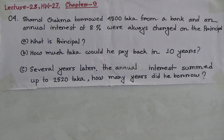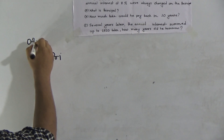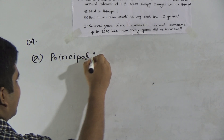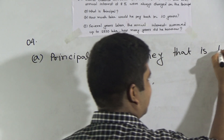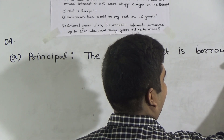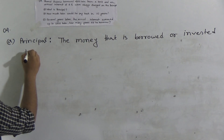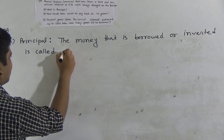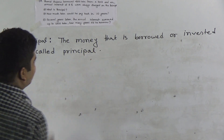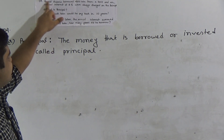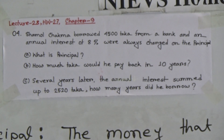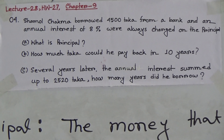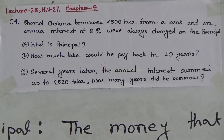Question number A — principal. The money that is borrowed or invested is called principal. From this stem, we notice that Shamul Chakma borrowed 4500 Dhaka from a bank. He borrowed 4500 Dhaka from a bank, so this amount of Dhaka is the principal. And it is a suitable example for principal.